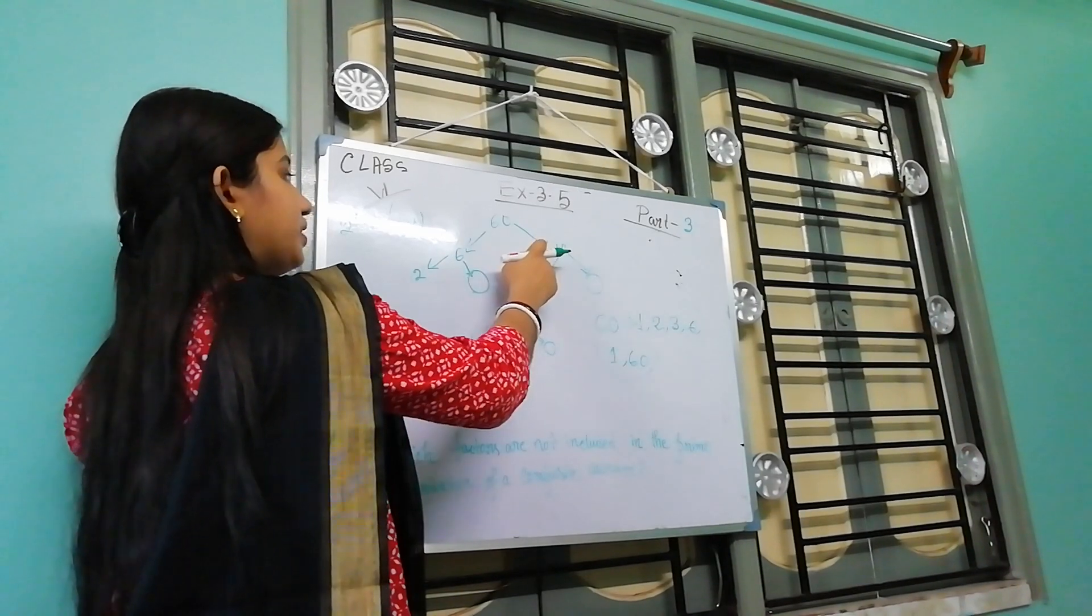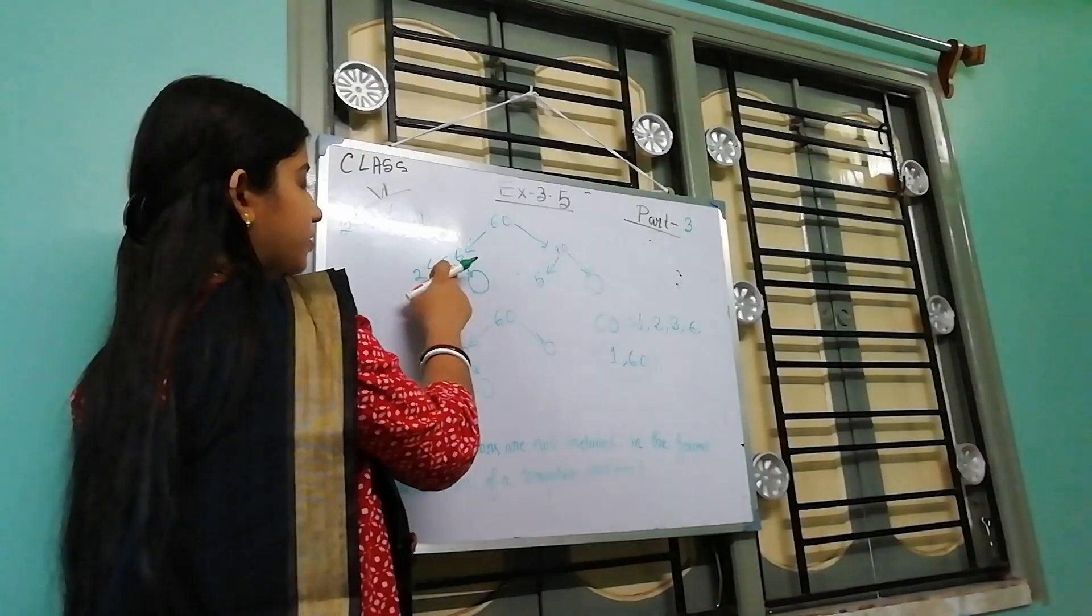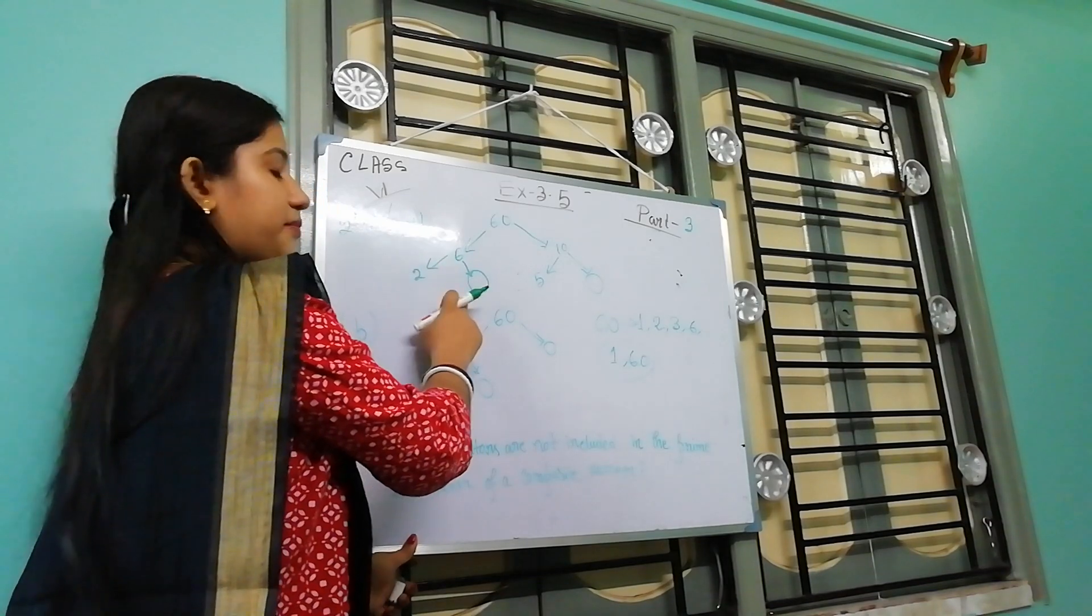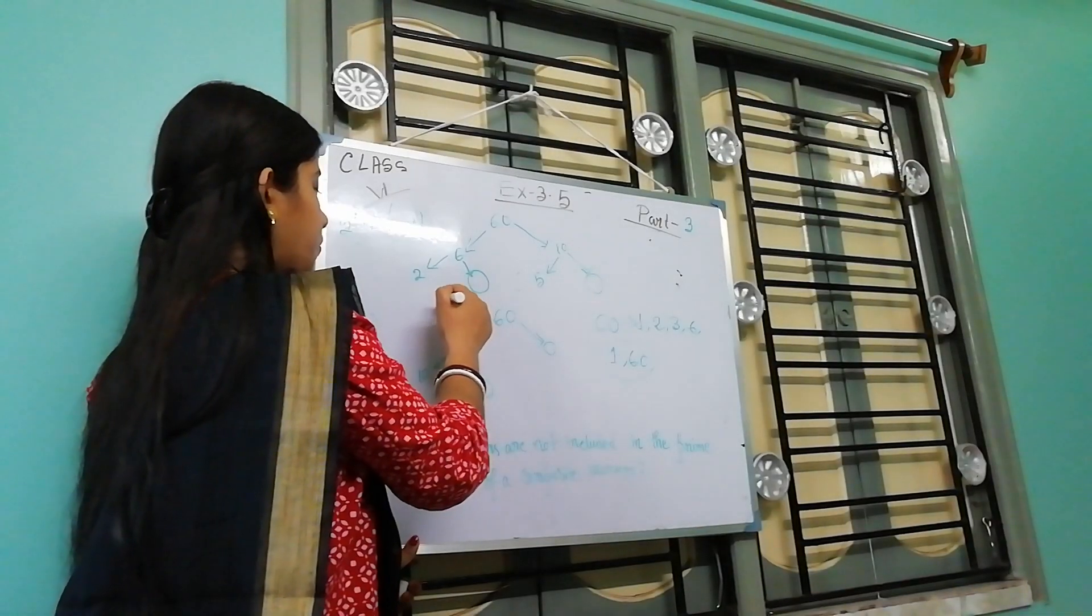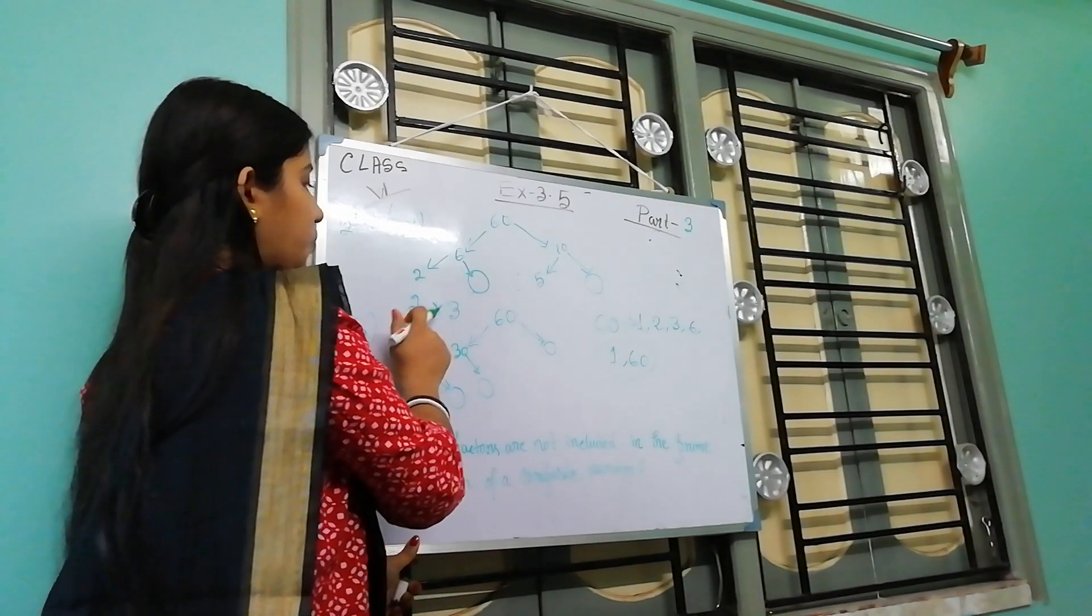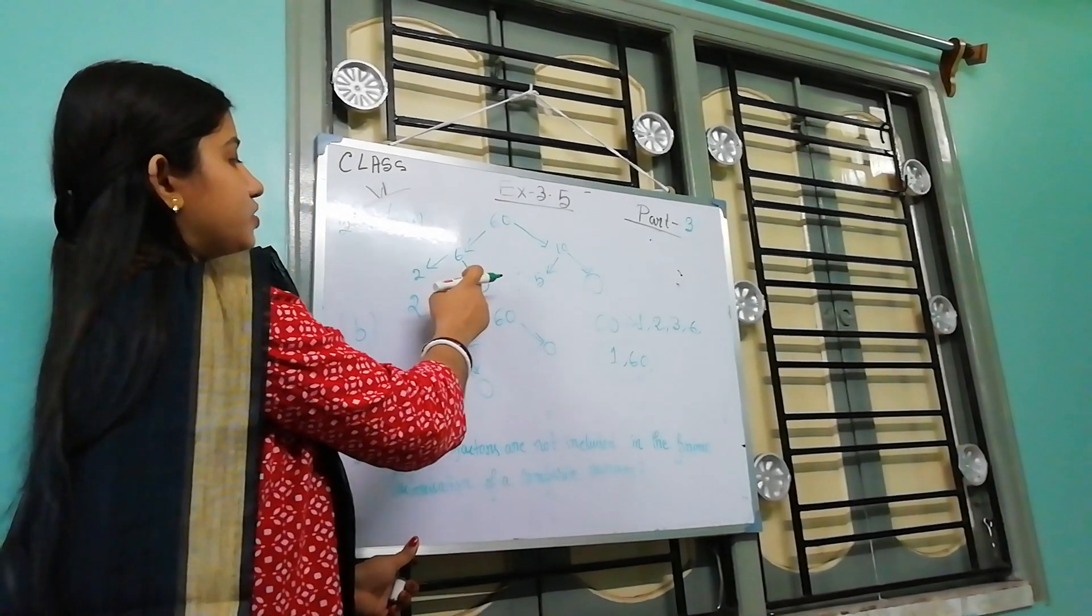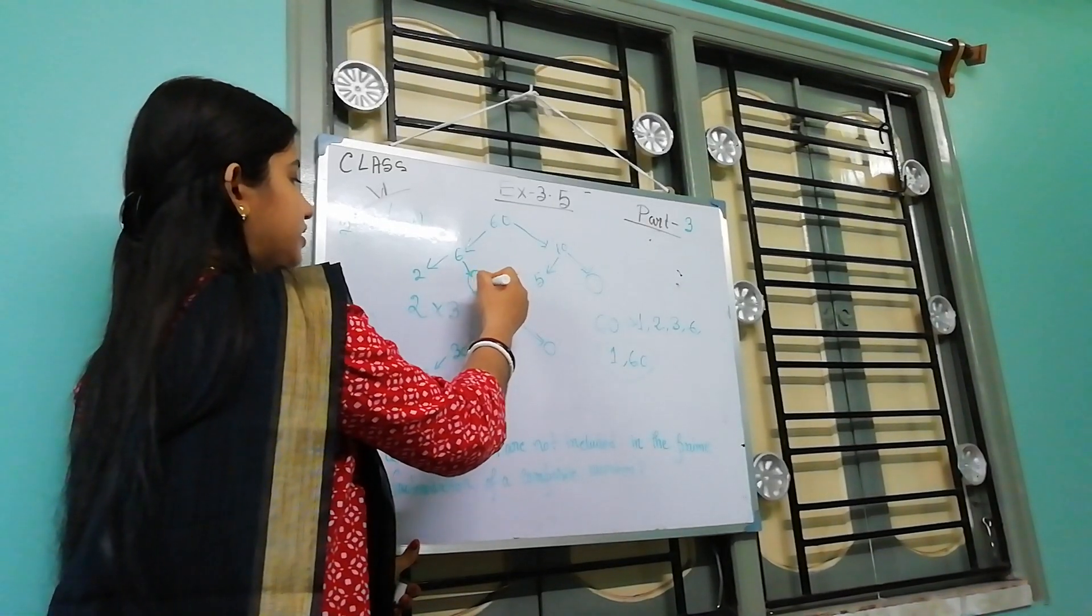6 into 10, this is 60. And 6 we divide into 2 prime factors. So 2 into 3, 2 into 3, this is 6. So in this portion, this is 3.